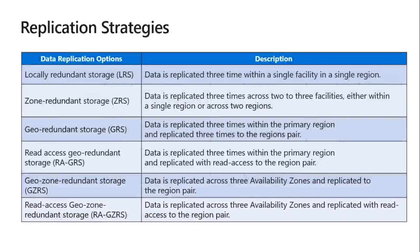Replication strategies: LRS creates three copies in the same data center. ZRS also creates three copies but placed in different zones. Geo Redundant creates six copies - three in primary and three in secondary. The secondary is not accessible in GRS, but using failover it can be accessed. In RAGRS, the secondary region is also accessible in read-only mode. Geo Zone Redundant means the copies will also be present in different zones under the primary and secondary regions. Read-access secondary region can be accessed, with the three copies placed in different zones.